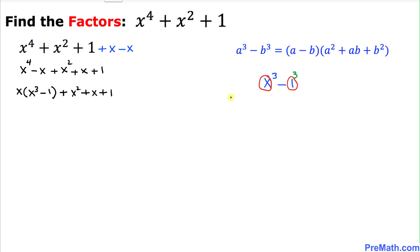Let's find the factors using this formula. This could be written as (x minus 1) times (x squared plus x times 1 plus 1 squared). Simplifying, we get (x minus 1) times (x squared plus x plus 1).